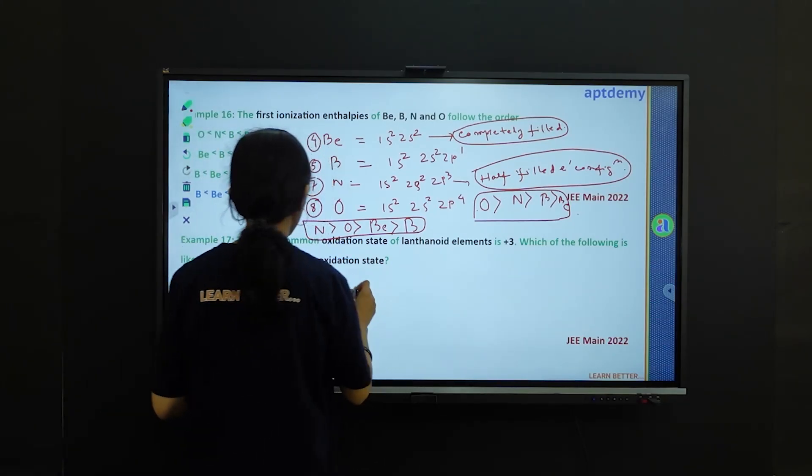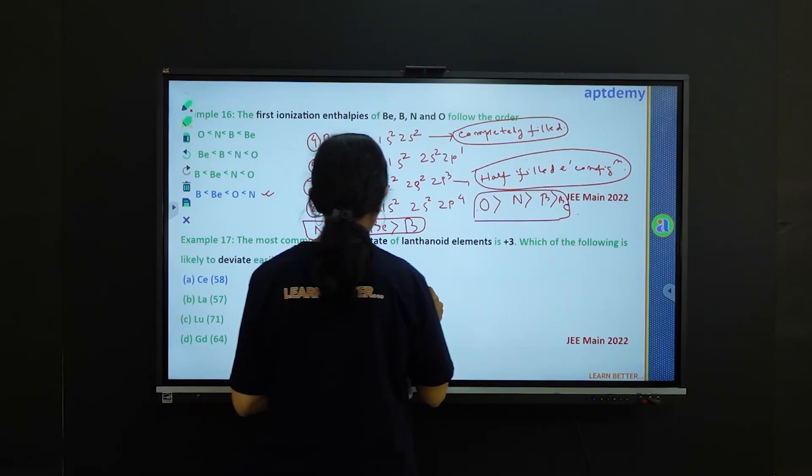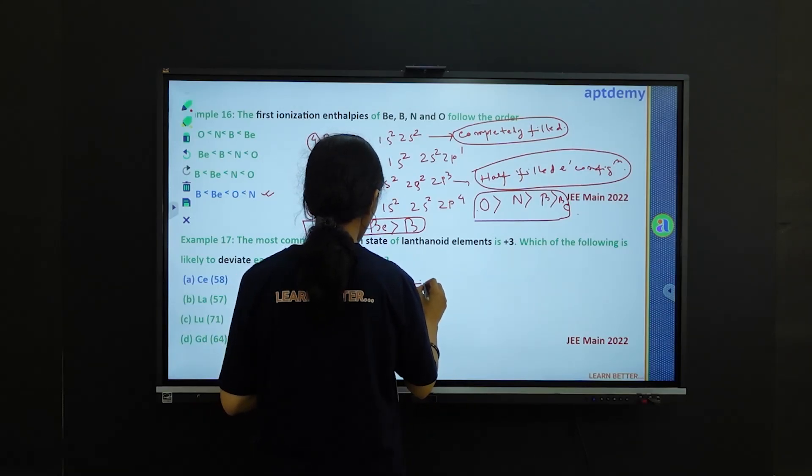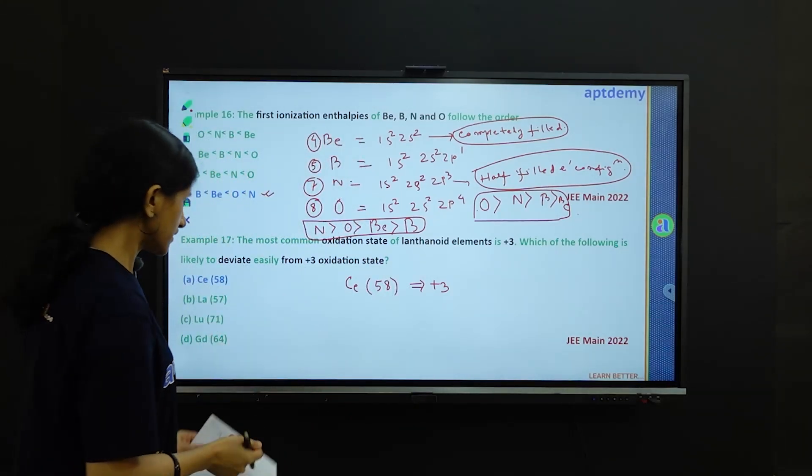What we know is that Ce, which is of atomic number 58, it will show plus 3 oxidation state, but it can easily deviate to get plus 4 oxidation state.